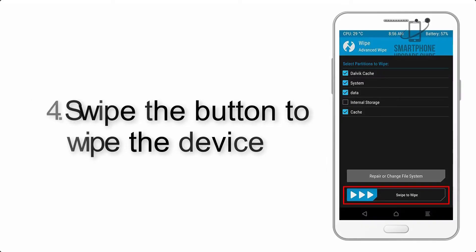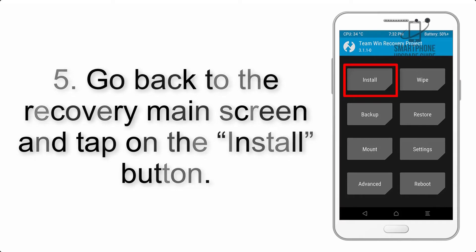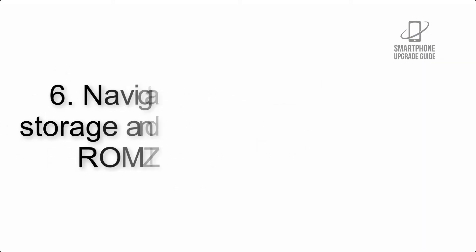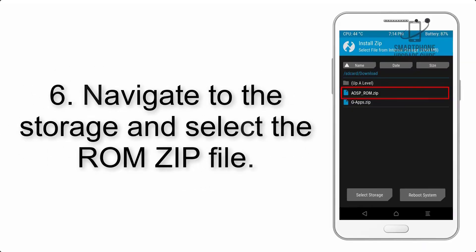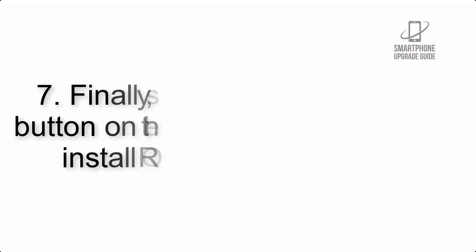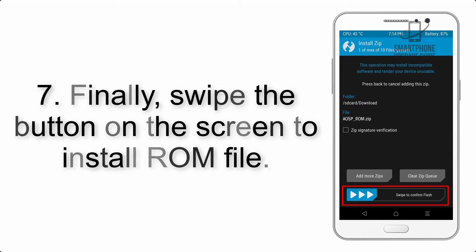Step 4: Swipe the button to wipe the device. Step 5: Go back to the recovery main screen and tap on the Install button. Step 6: Navigate to the storage and select the ROM zip file.